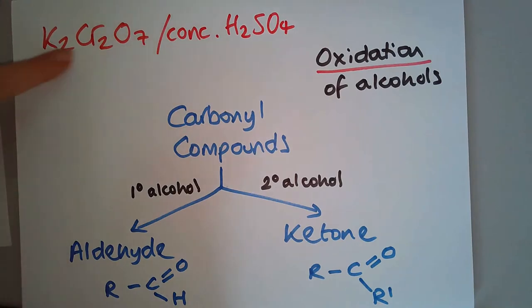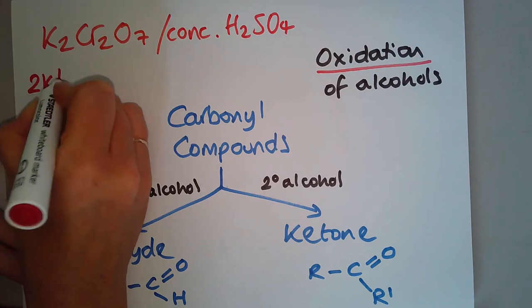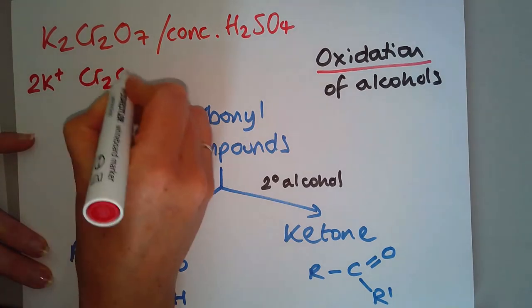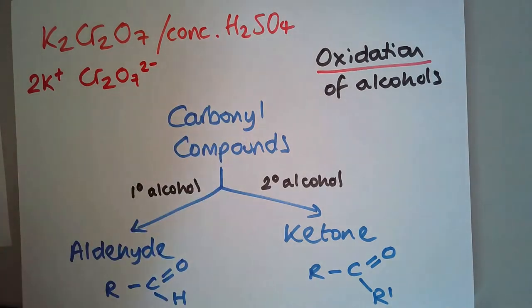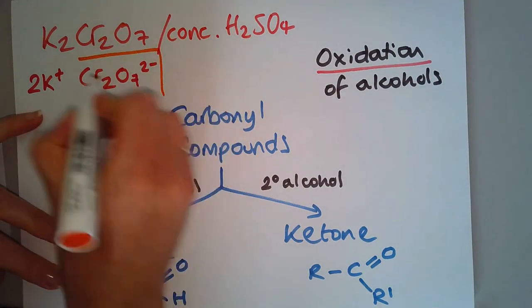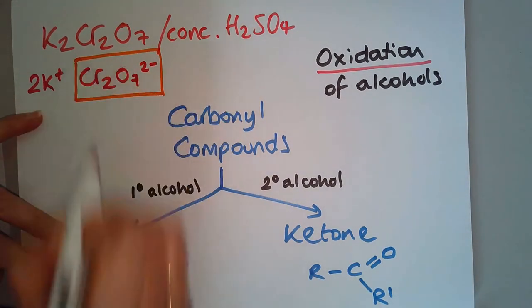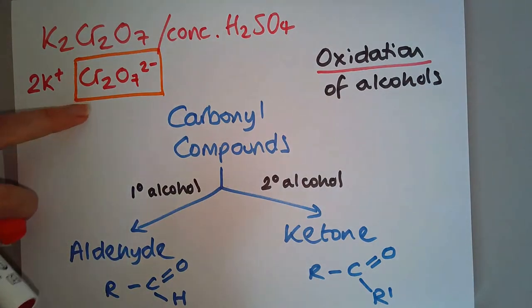Also remember that this is ionic and it'll dissociate into its ions. So you've got two potassium ions, which leaves you with the dichromate ion, and it's actually this that is doing the oxidizing. This gets reduced.